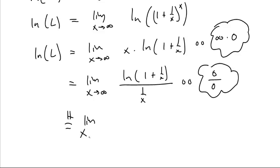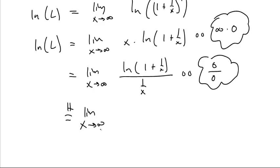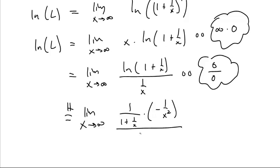L'Hôpital's rule says that we take the derivative of the top and the bottom. The derivative of the natural log of anything is one over that thing times the derivative of what's inside. The derivative of one is zero and the derivative of one over x is negative one over x squared. Similarly, the derivative of one over x is negative one over x squared, which means these two cancel each other out entirely.